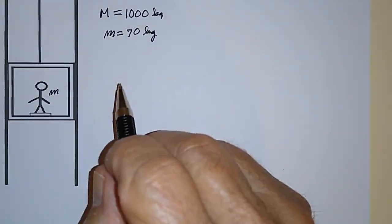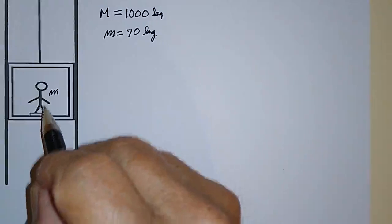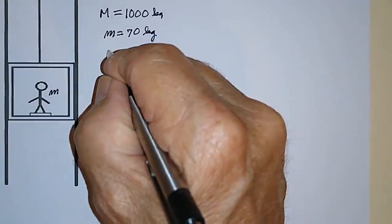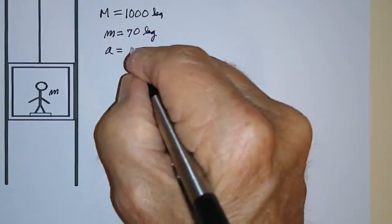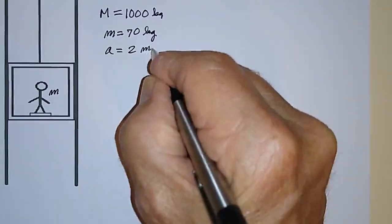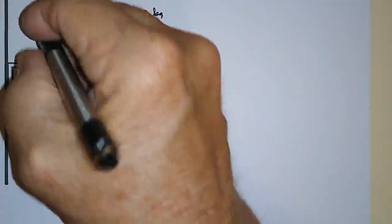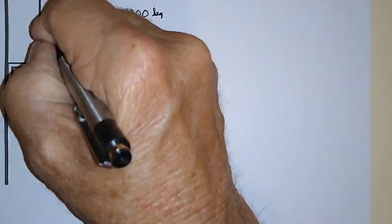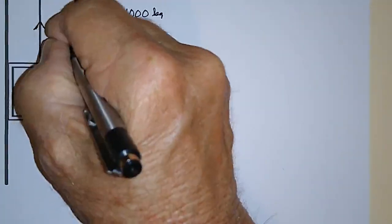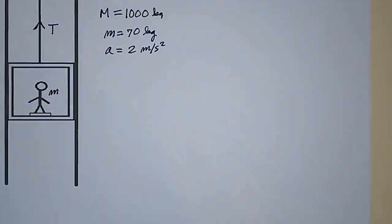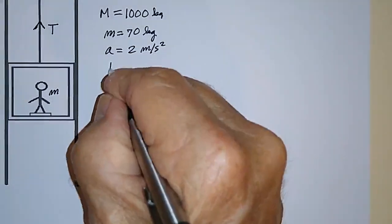And what we want to know is that if this elevator is to accelerate upward at the rate of a equals two meters per second squared, what is the tension in the cable? In other words, we're pulling up with the tension T. What is that tension? That's what we want to find out.